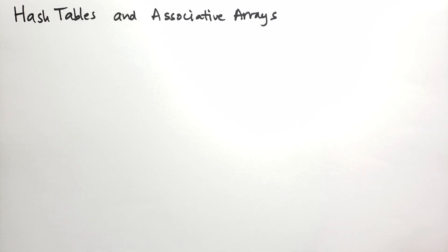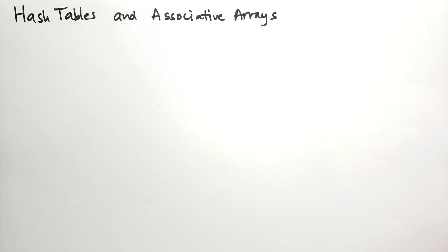One of the most amazing data structures in computer science, with the most profound consequences, is the hash table. This is also known as a hash map, or in Python we just call it a dictionary. In this video, I'm going to go over the theory of the hash table, what it is, how it works, and the associated algorithms.